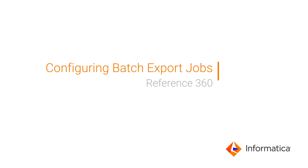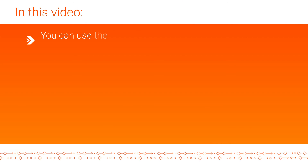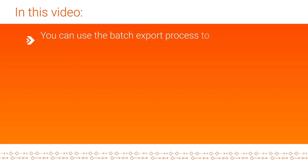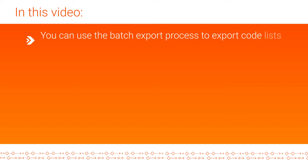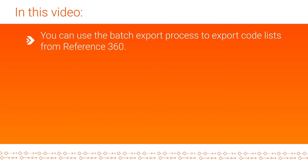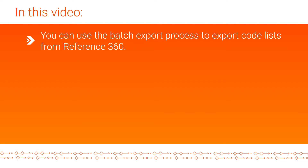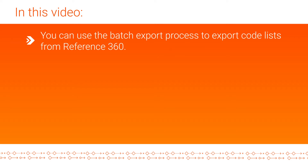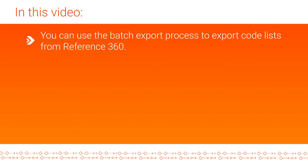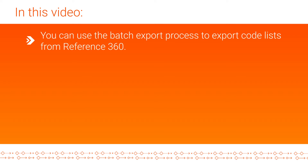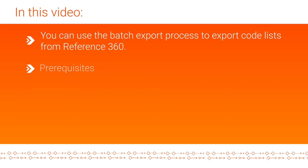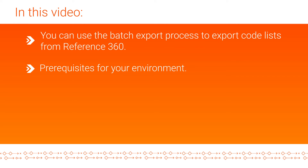This video guides you through the batch export process in Informatica's Reference360. You can use the batch export process to export code lists from Reference360. We'll export data from a code list of country codes to a flat file. But before we dive in and export code lists in Reference360, we'll need to first discuss some prerequisites for your environment.